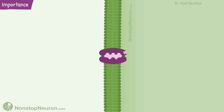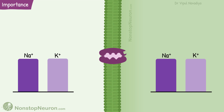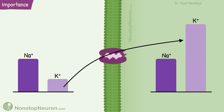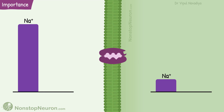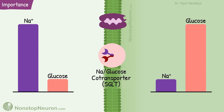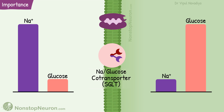Now let's talk about the importance of this activity. First, it establishes electrochemical gradients for sodium and potassium. The gradient of sodium can secondarily be used for active transport of other substances. For example, glucose uptake by the sodium-glucose co-transporter at epithelial cells of the proximal tubule. Here, glucose concentration is higher inside the cell, so taking glucose in requires energy. This energy comes from the downhill movement of sodium, moving the glucose uphill. Thus, the sodium gradient established by this pump is used for active transport of other substances.